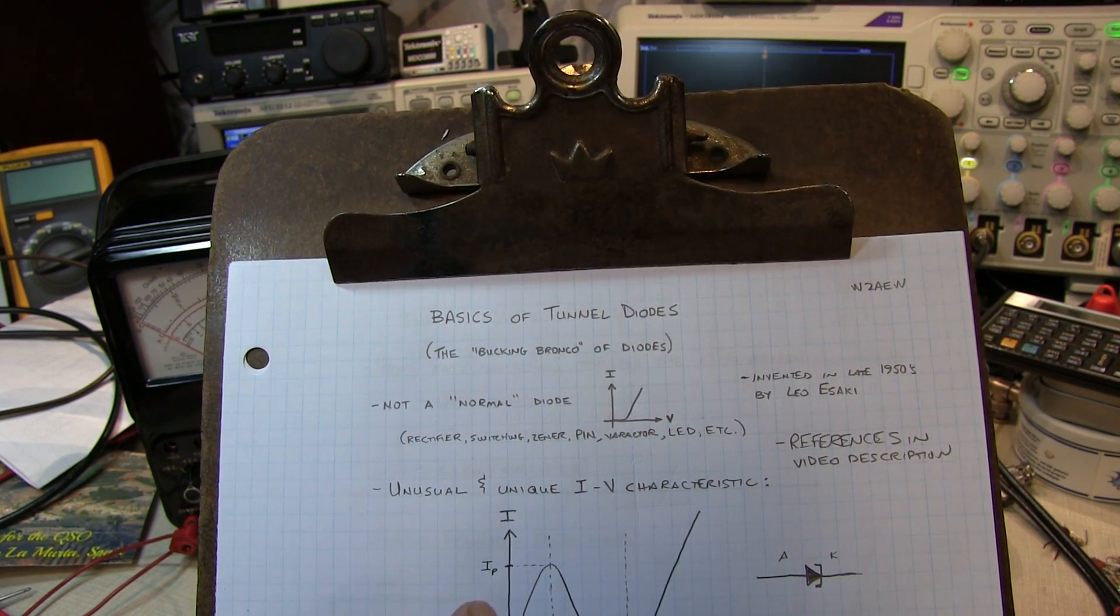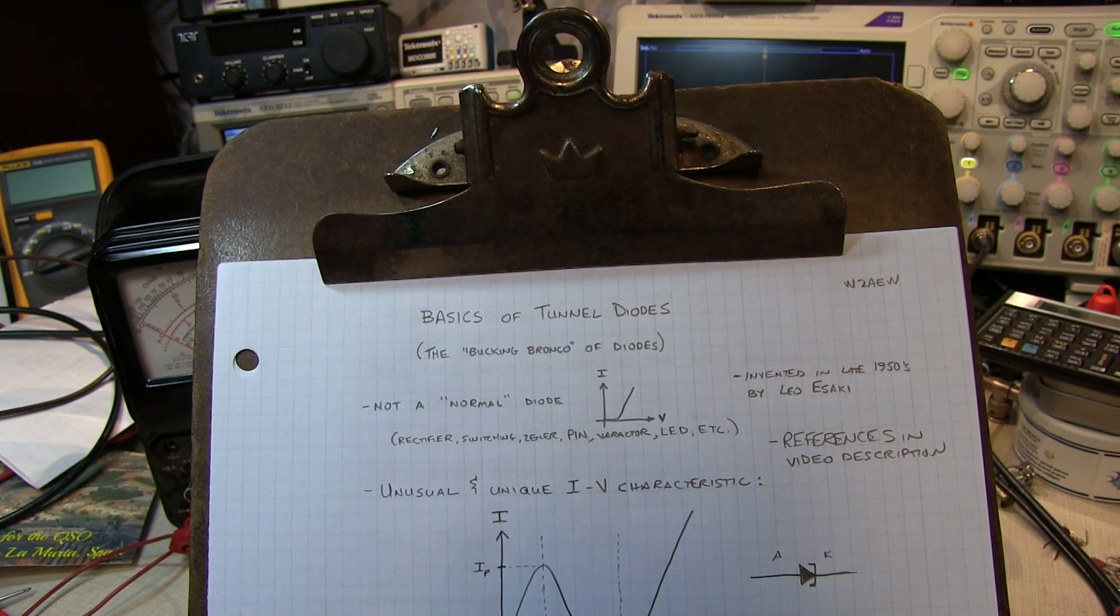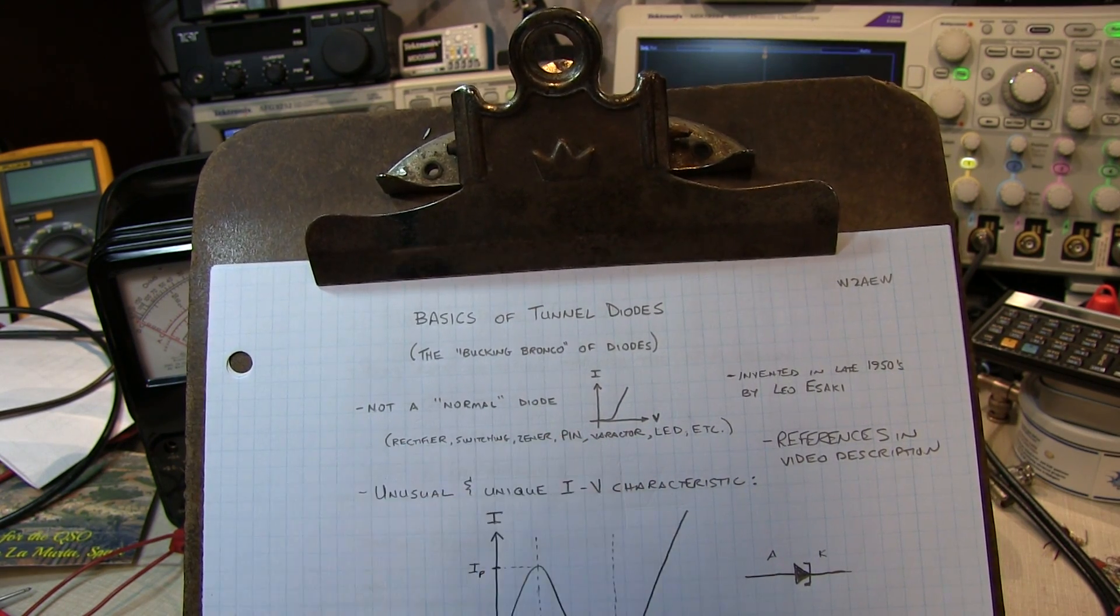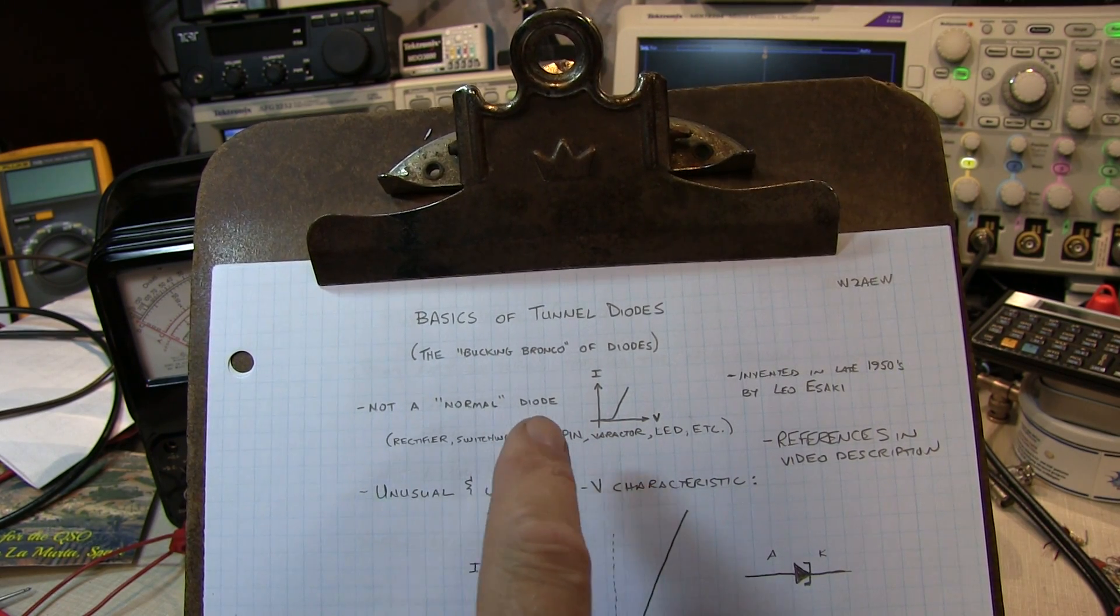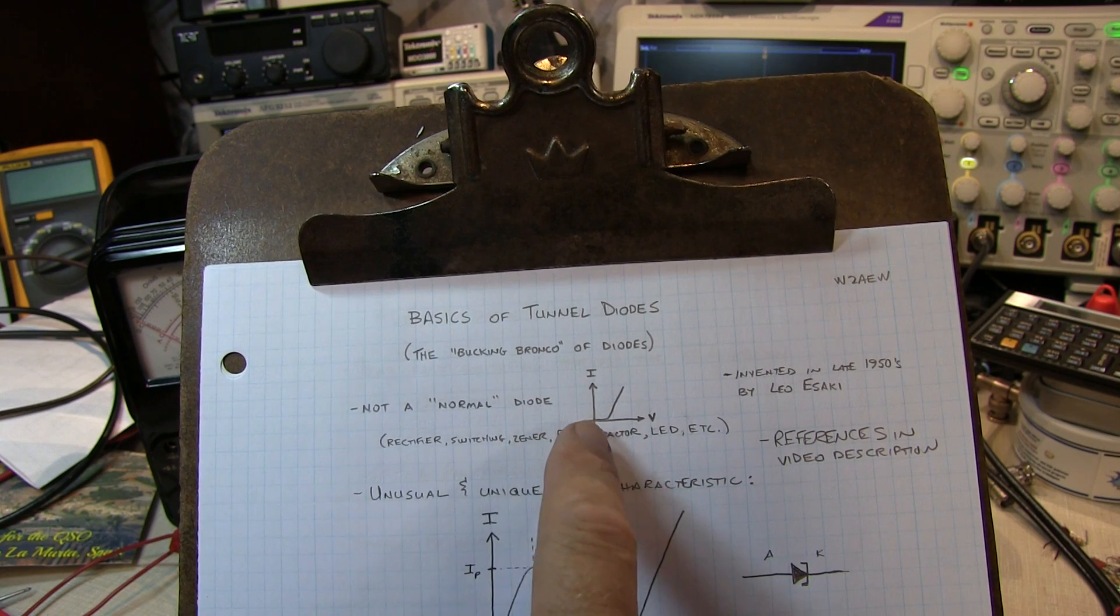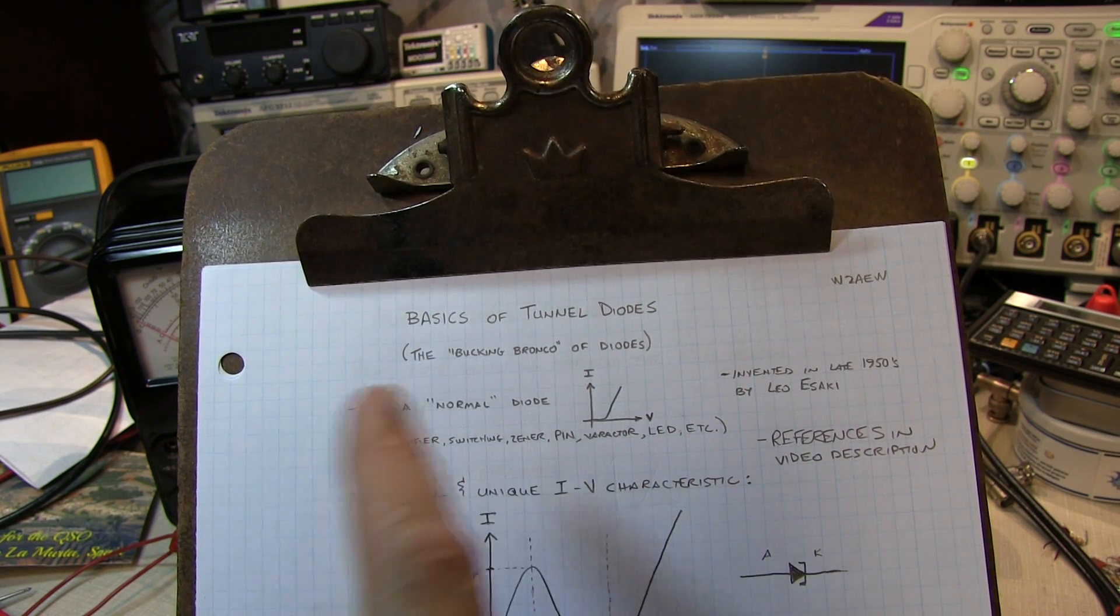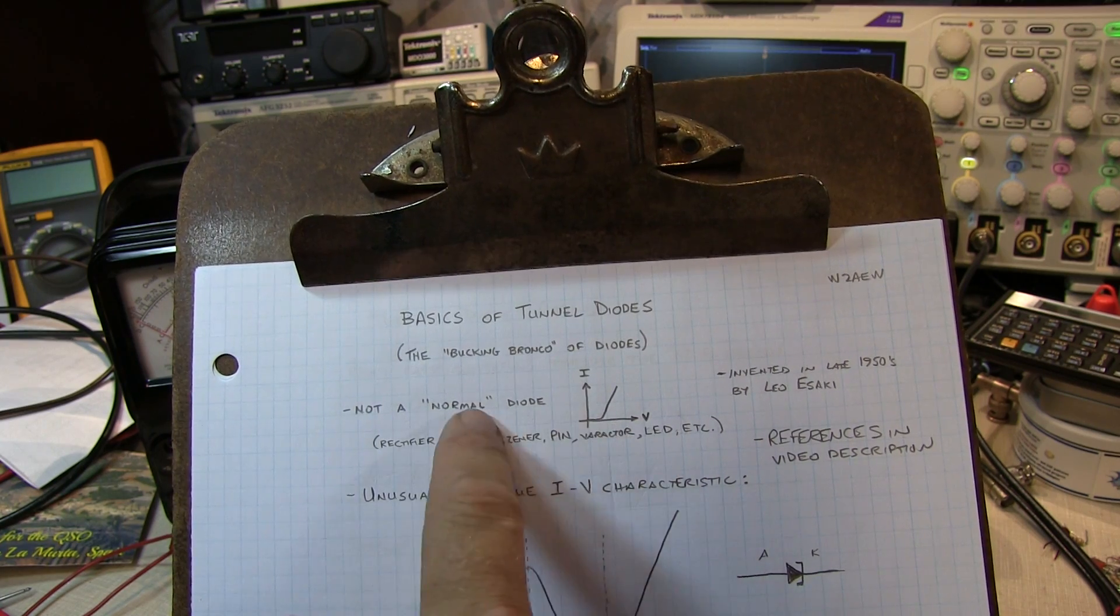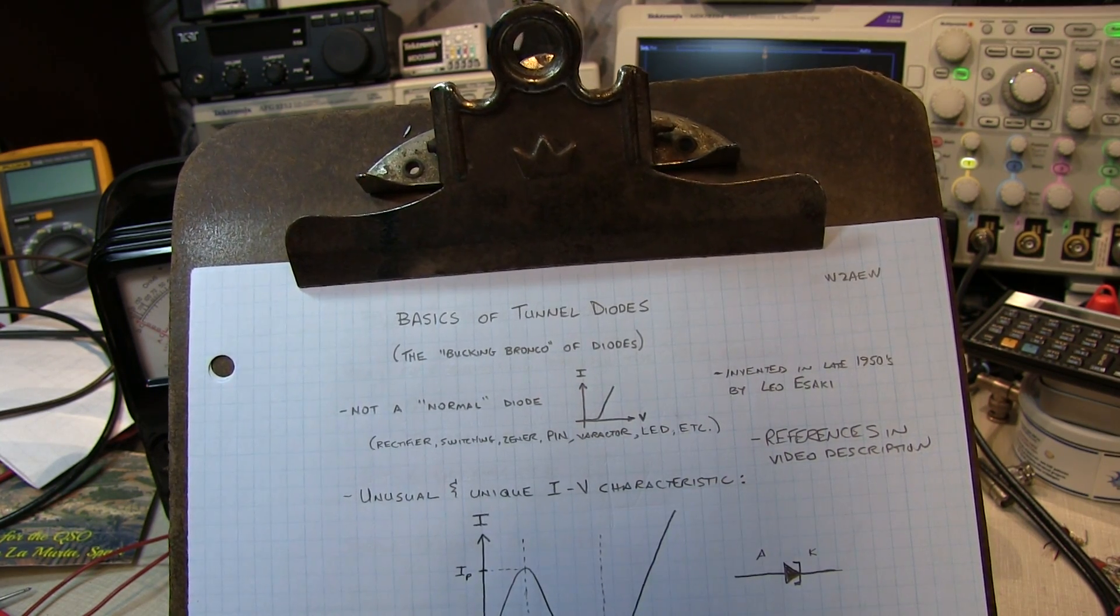Most diodes that we run across, whether they're rectifiers, switching diodes, Zener diodes, PIN diodes, varactors, or even LEDs, they all share a common characteristic in that they generally will conduct current in one direction and block it in the other. Of course, the Zener's an exception in that case where it'll break down, but they all have that same basic IV characteristic.